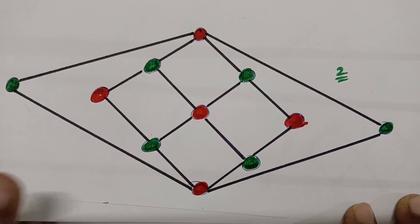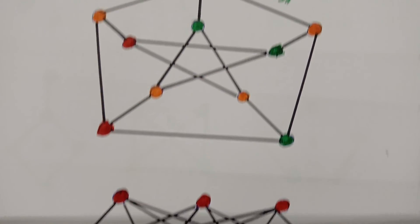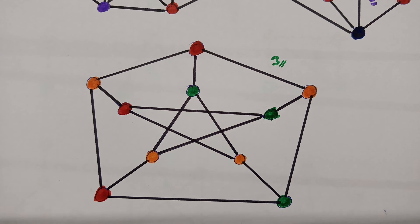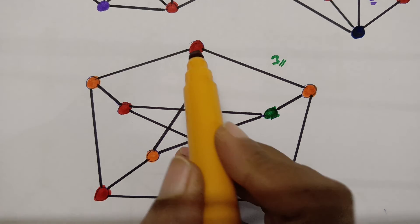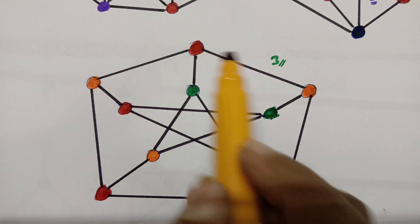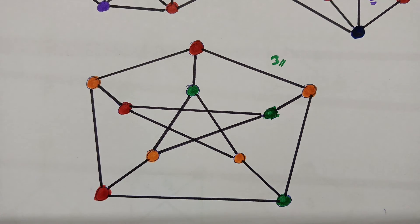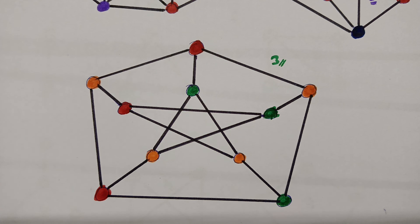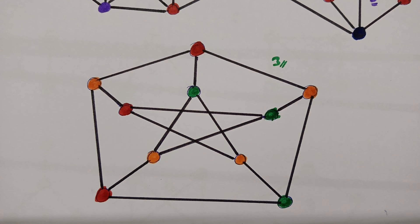To summarize: the complete bipartite graph has chromatic number two, the Peterson graph has chromatic number three, and this is how we color graphs — no two adjacent vertices should get the same color. The minimum number of colors needed to color a graph is called the chromatic number. Thank you — please practice, share with your friends, and subscribe for more videos.